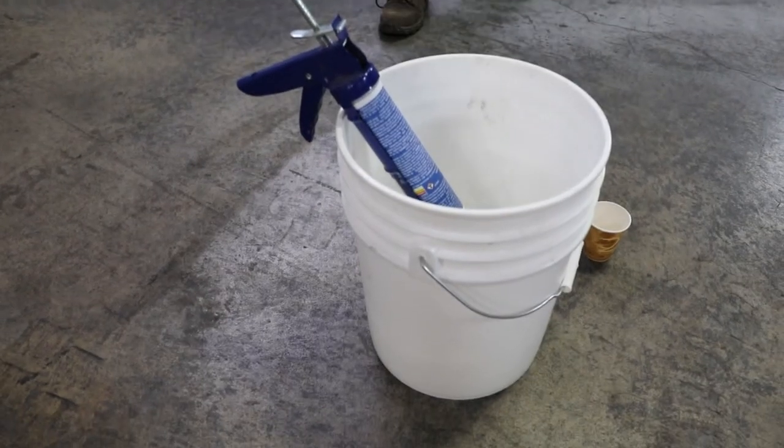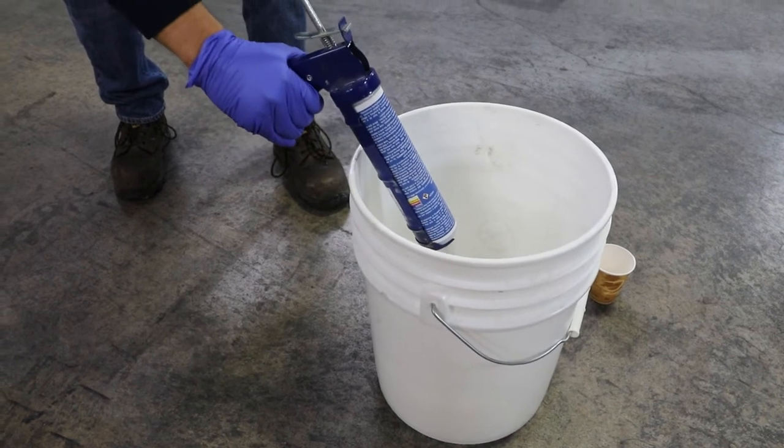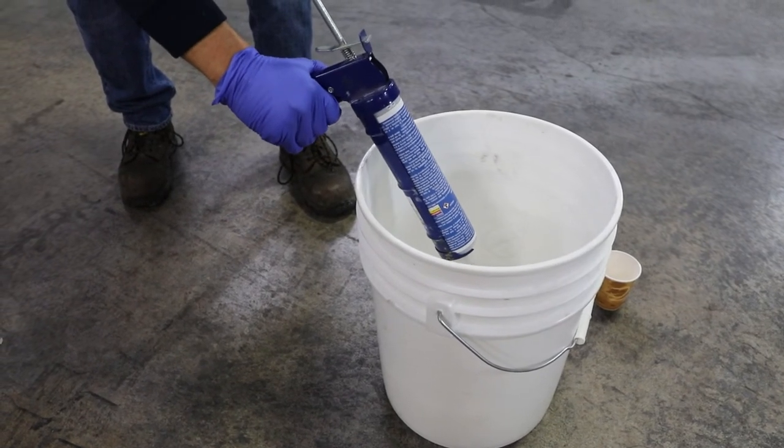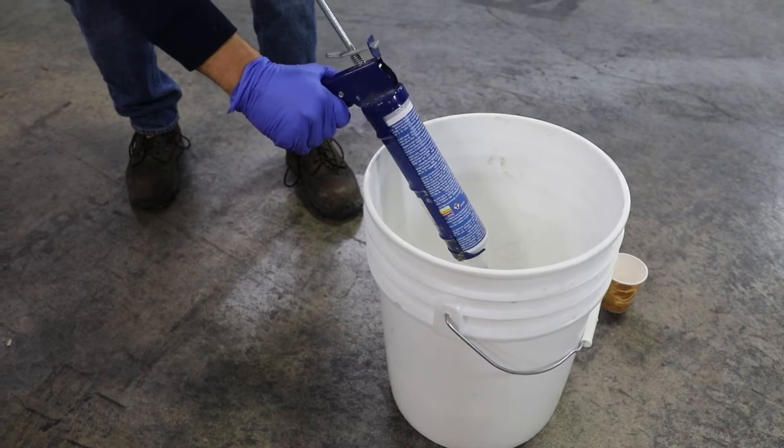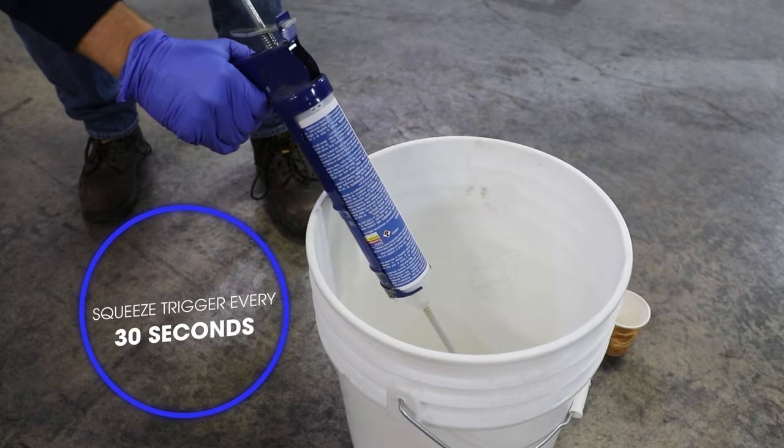At this point, always keep the tube set pointed down to avoid an improper mix or cross-contamination. If you must pause in your injection, hang the gun over a 5-gallon pail, squeezing the trigger every 30 seconds to avoid materials hardening in the mixer.